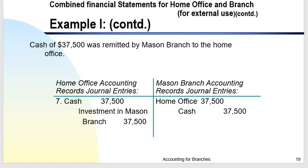Seventh transaction: cash of $37,500 was remitted by Mason Branch to the home office. There is a transfer of assets from the branch to the home office. The branch entry is: debit Home Office, credit Cash, since there is a cash outflow from the branch. The home office will record: debit Cash $37,500, credit Investment in Mason Branch — decreasing the investment account.